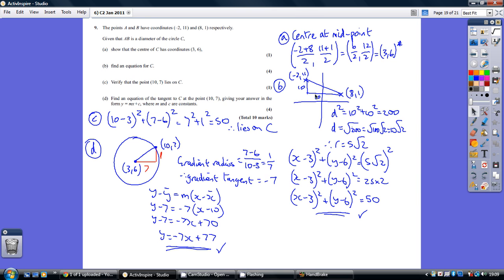So, do a quick sketch to help you. We want to work out this length, we can do this by Pythagoras. The base of the rectangle goes from minus 2 to 8, which is 10. The height is going from 1 to 11, which is 10.